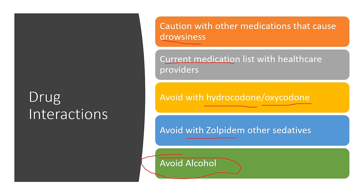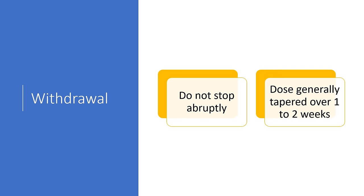It is really best to avoid alcohol with this medication. Withdrawal can occur, so it is recommended you do not stop gabapentin abruptly — this is dose dependent. At 300 milligrams at bedtime, it can usually just be stopped. At 1,800 milligrams or beyond, it should be tapered generally over one to two weeks. Talk to your healthcare provider or pharmacist about a tapering schedule.